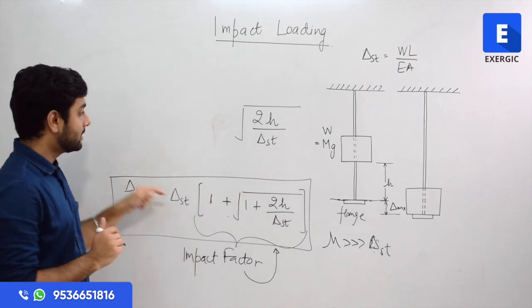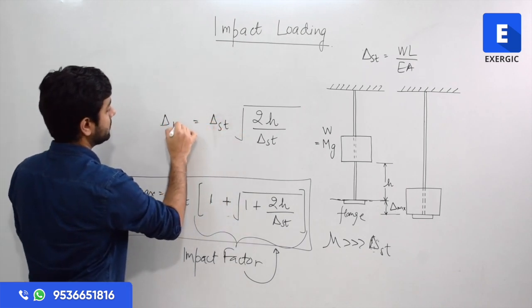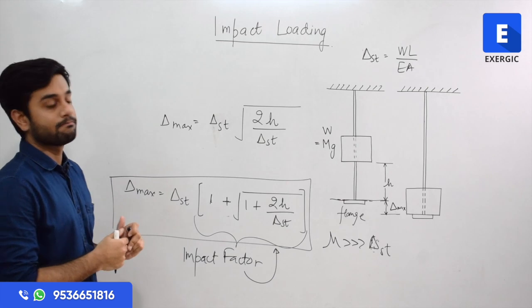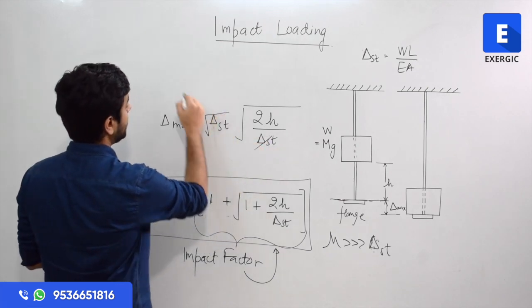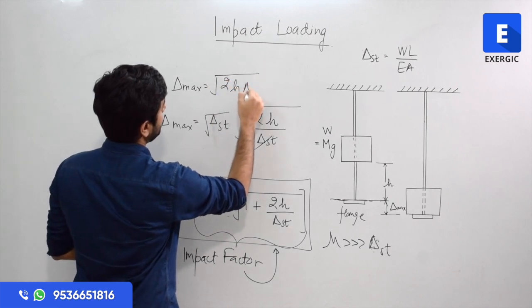So what are you left with? Del_st here is equal to del_max. If you simplify it, what you will get? Del_max is equal to root 2H del_st.